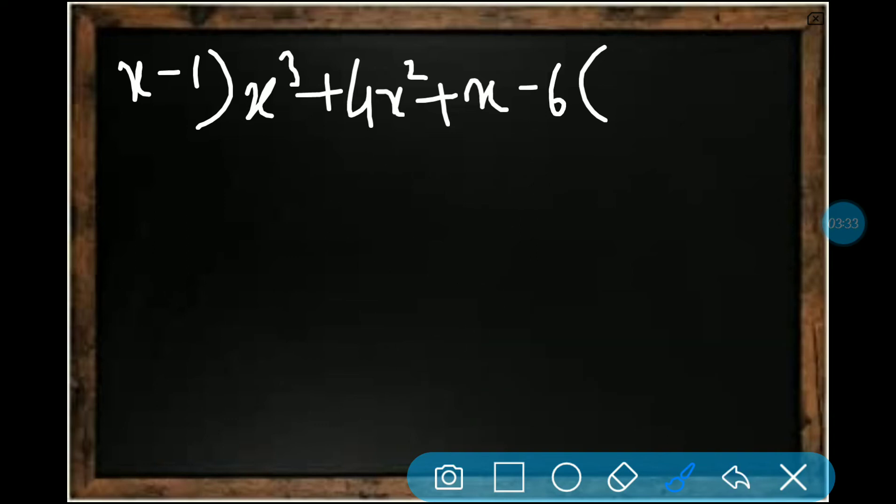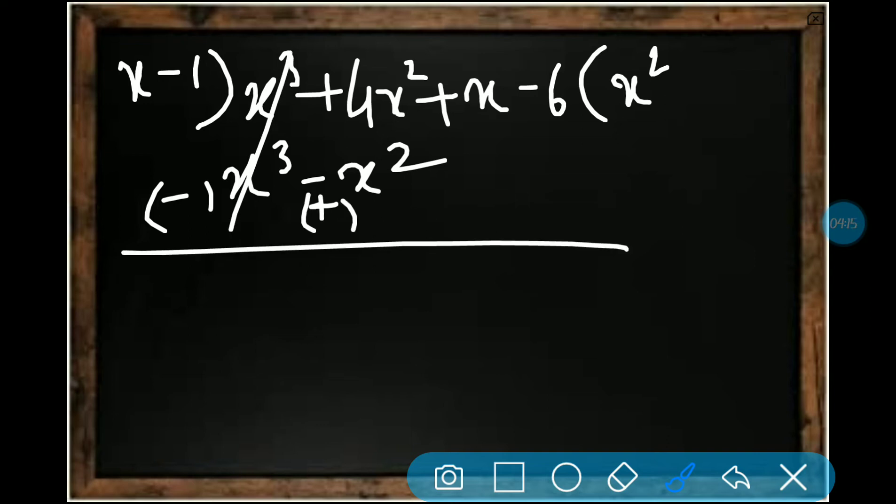x - 1 will be the divisor, like how you do normal division. Then p(x) will be x³ + 4x² + x - 6, and our coefficient will be on the right side. This x will divide x³, so x³ by x, you get x². We put x² in the coefficient side. Before subtracting we have minus 1 also, so whatever is there we put with a minus sign. This becomes plus, so both get cancelled, and 4x² + x² is 5x². This term will get down, plus x. Bring it down.